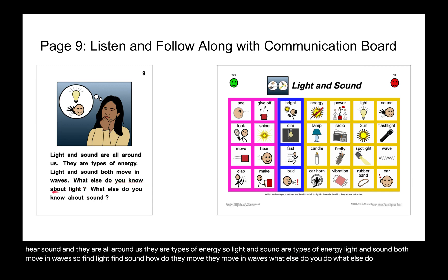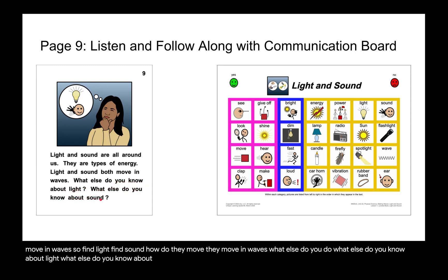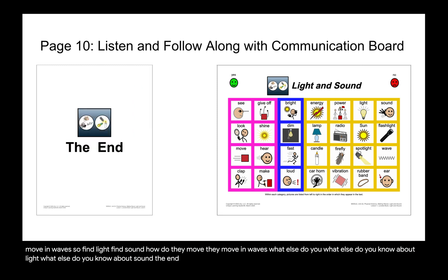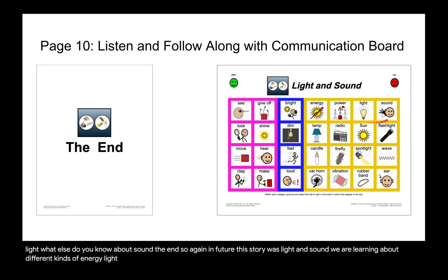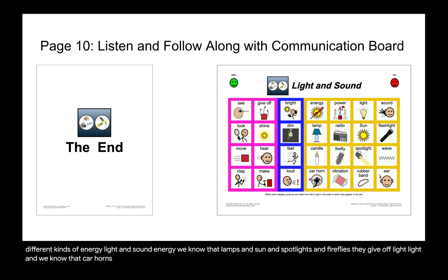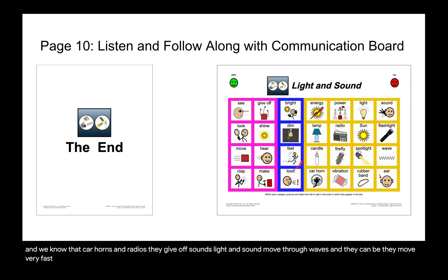What else do you know about light? What else do you know about sound? The end. This story was Light and Sound. We are learning about different kinds of energy — light energy and sound energy. We know that lamps, the sun, spotlights, and fireflies give off light. Car horns and radios give off sound. Light and sound move through waves, they move very fast, and that's how we either see them or hear them. First lesson: light and sound.